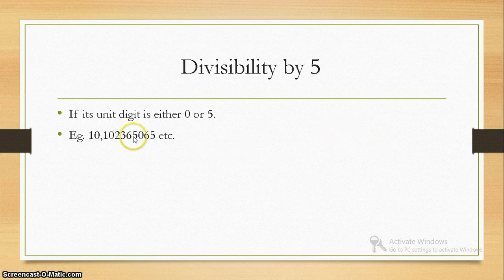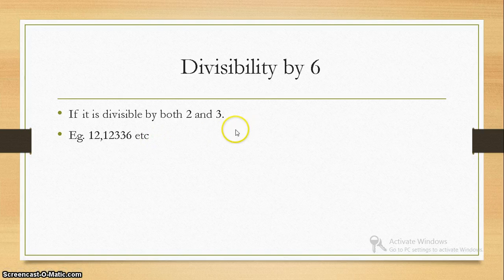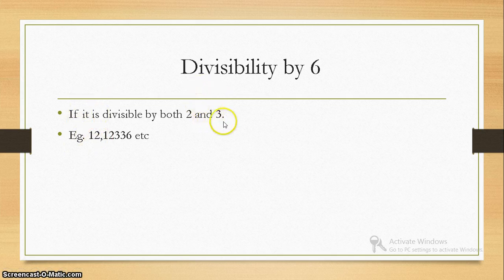Divisibility by 5: if the unit digit is either 0 or 5, then the number is divisible by 5. Divisibility by 6: if the number is divisible by both 2 and 3, then it is divisible by 6. Consider the example 12 — its unit place is 2, so it passes the divisibility test for 2. The sum of digits of 12 is also divisible by 3. Hence 12 is divisible by 6 as well.